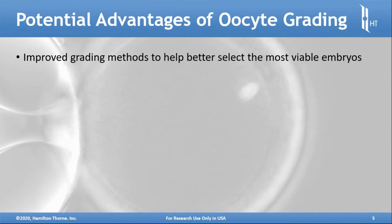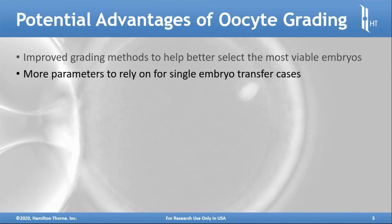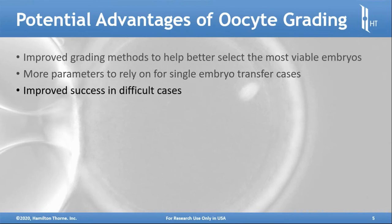There are potential advantages for oocyte grading. If we can improve grading methods at the very beginning, we can select more viable embryos. With the prevalence of oocyte cryopreservation, we can ensure we are freezing oocytes more likely to be viable. If there are more parameters to rely on for single embryo transfer cases — which is the goal to avoid high order multiples — that's certainly an advantage, and improving success in difficult cases benefits patients.